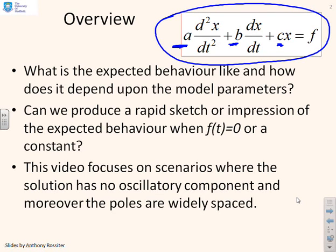We're looking at scenarios where f is a constant. Zero is one form of a constant. And this particular video is going to look at scenarios where the poles are real and widely spaced. That's the most important thing, that they're widely spaced. Not only are they real, but they're also widely spaced.